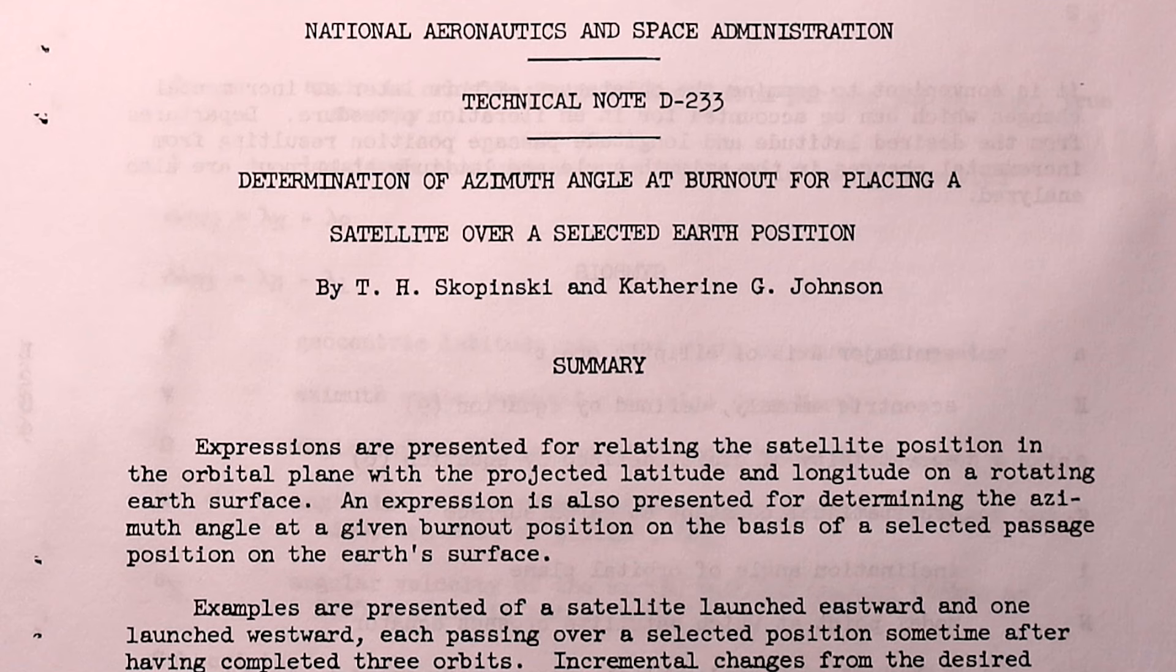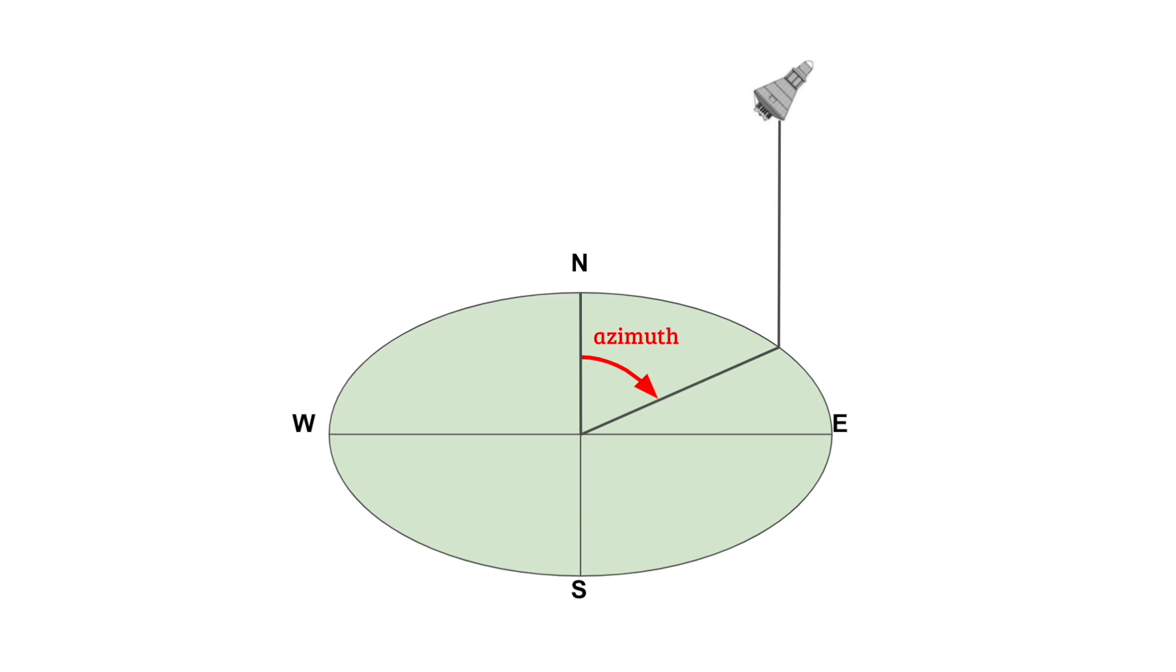Let's go through some of the terms. The azimuth angle is measured from north and is the angle that you're pointing when you launch a rocket.